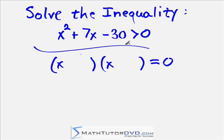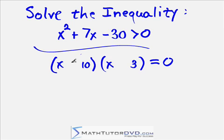What times what can give us 30? There are lots of options — 10 times 3, 15 times 2, 6 times 5 — but really the only thing that's going to work is 10 times 3. That gives us our 30, but we also need to get 7x in the middle. So if I put a plus here and a minus there: 10 times negative 3 gives us negative 30, and on the inside we'll have 10x and on the outside negative 3x. When we add those together, we get positive 7x.